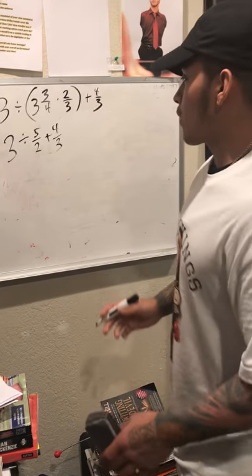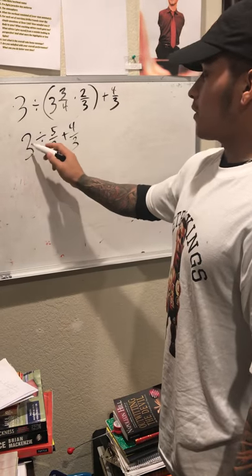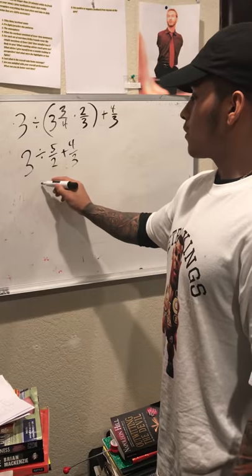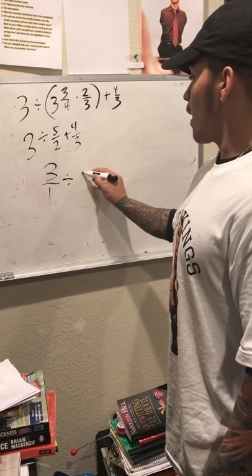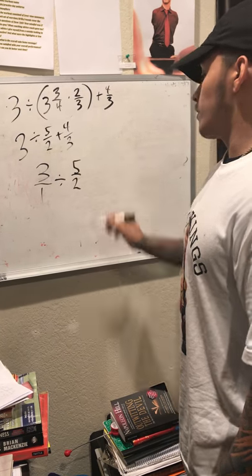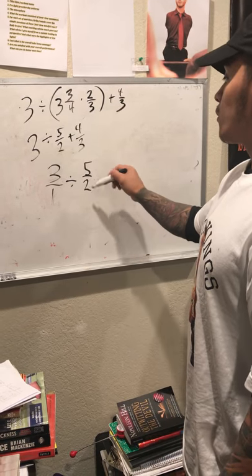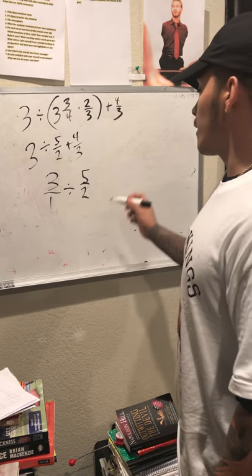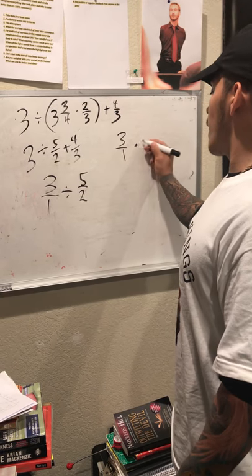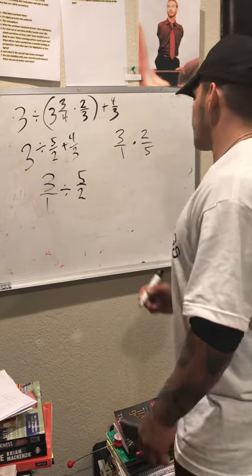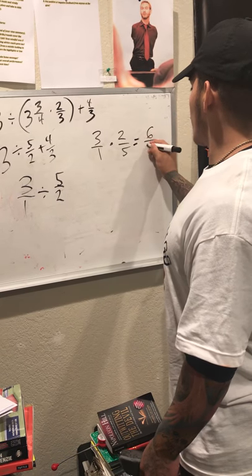Following PEMDAS and the order of operations, we're gonna attack the division first. What we're gonna do is put 3 over 1 and divide it by 5 over 2. Next we're gonna flip the reciprocal and multiply, so that turns into 3 over 1 times 2 over 5, which comes out to 6 over 5.